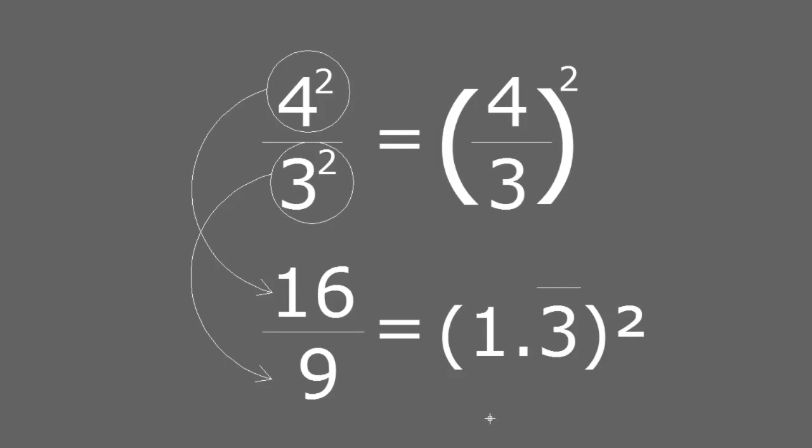That would be equal to 1.33333, an infinite amount of 3s after the decimal point. So, 16 divided by 9 has to be equal to 1 and 1 third, squared.